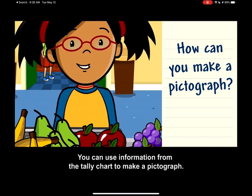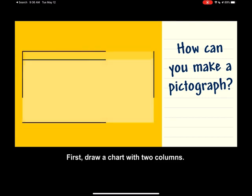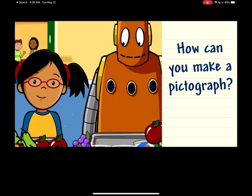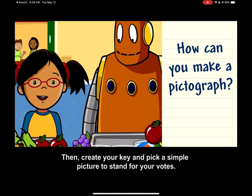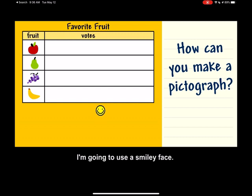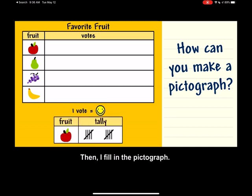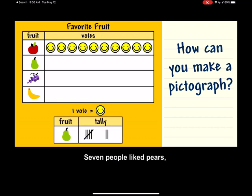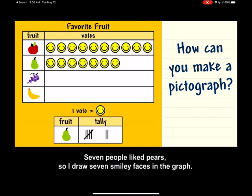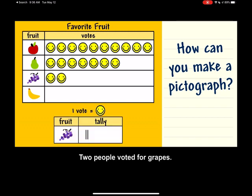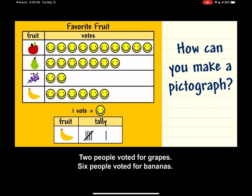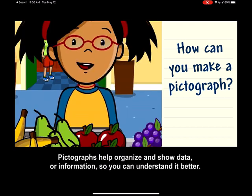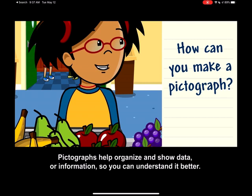How many people like pears the best? Start with five, then count on two, six, seven. Seven people like pears the best. You can use information from the tally chart to make a pictograph. First, draw a chart with two columns. Write the title and write the choices on the left. Then, create your key and pick a simple picture to stand for your votes. I'm going to use a smiley face. One smiley face will stand for one vote. Then, I fill in the pictograph. Since ten people voted for apples, I draw ten smiley faces in the graph.